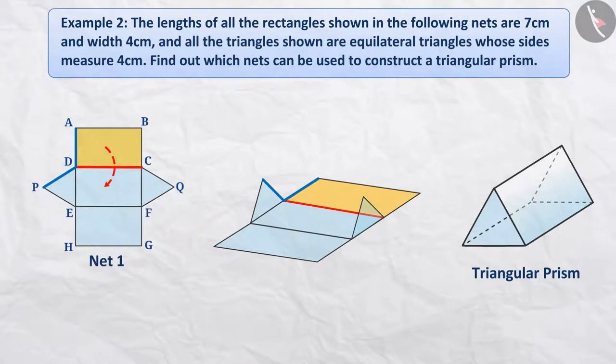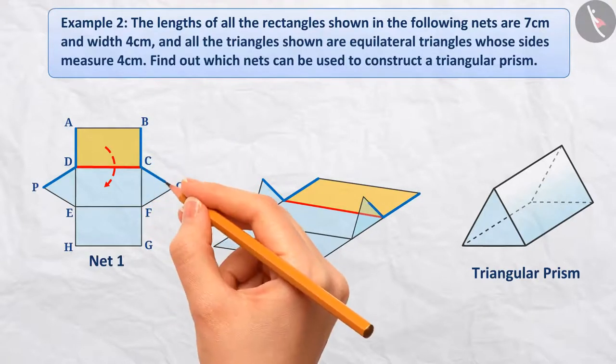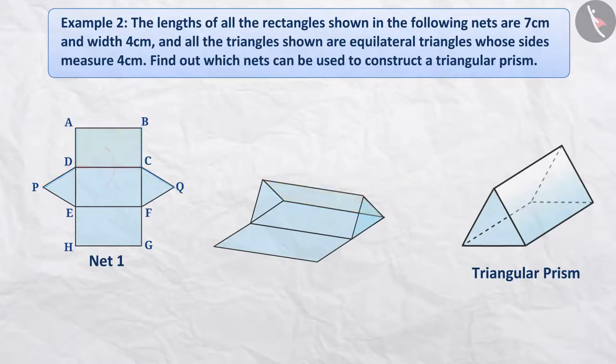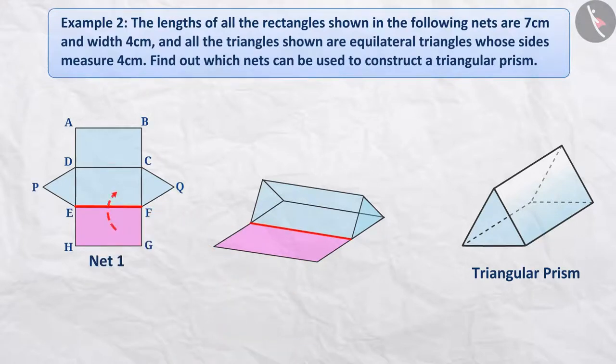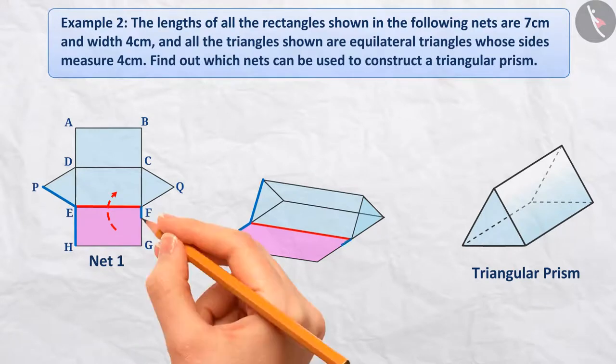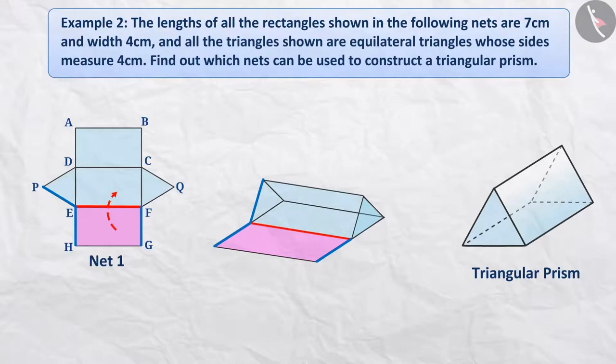Similarly, we will fold the rectangle EFGH along the side of EF in such a way that its side EH is attached to arm PE of triangle PED and the side FG is attached to the arm QF of triangle QCF. In this way, we will get a triangular prism.